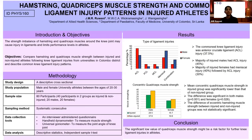Knee is the most common injury site in athletes, and knee ligament injuries cause diminished performance levels in athletes. Strength of the muscles surrounding the knee joint is a critical component in stabilization of the knee, so proper balance between the muscles like quadriceps and hamstring is very important.